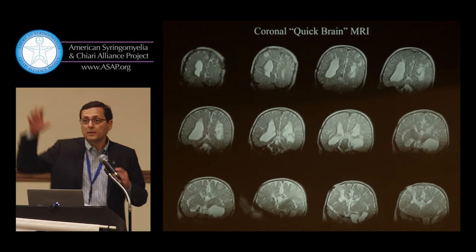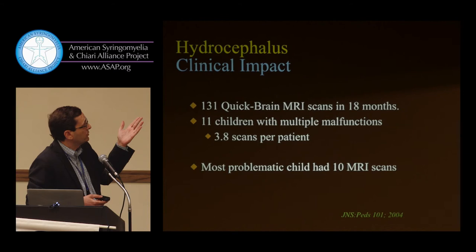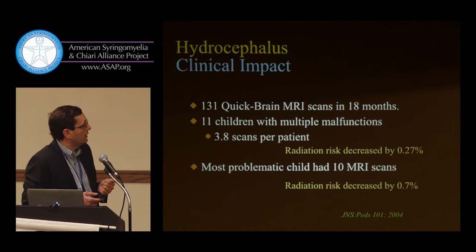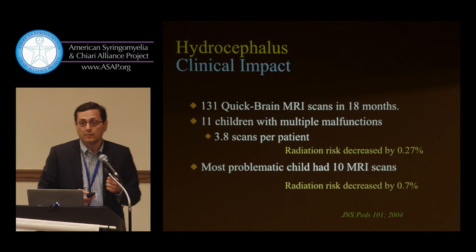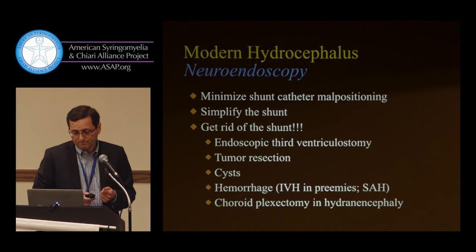When we looked at the numbers, we found that in 11 of those children the cancer risk was decreased by a quarter percent in 18 months. In the most problematic child — who had 10 MRI scans instead of 10 CT scans — we decreased the risk by more than half a percent in an 18-month period.